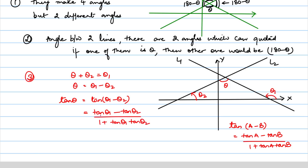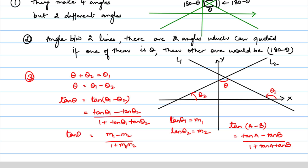Now, what is tan(theta1)? Tan of the angle of inclination is called the slope. Therefore, tan(theta1) is the slope of the first line — let's say m1 — and tan(theta2) is the slope of the second line — let's say m2. Therefore, we can write this as m1 minus m2 upon 1 plus m1 times m2. That is, if we know the angle of inclination of both lines, we find their slopes first and then use this formula to find the angle between the two lines.